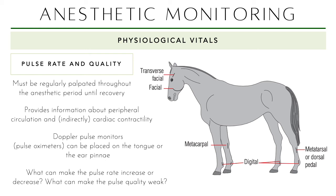What can make the pulse rate increase or decrease, or the pulse quality weak? There are many things. Number one: the patient is waking up. Two: heart rate increases during the compensatory mechanism of shock. It decreases if anesthesia is too deep or if shock has reached the decompensatory stage. Pulse quality is weak if you administered a vasoconstrictive drug — catecholamines, alpha-2 agonists. Be very careful about drugs you give because they may have cardiovascular effects you might not be aware of until you encounter it during surgery.